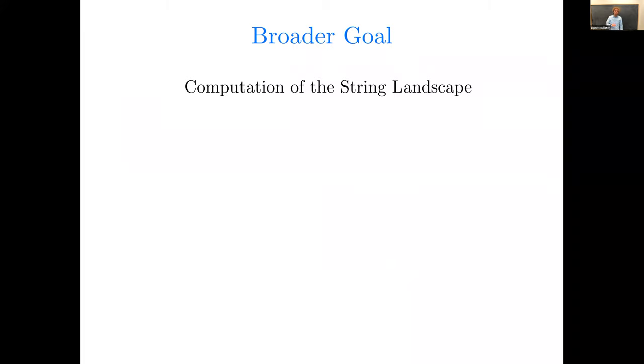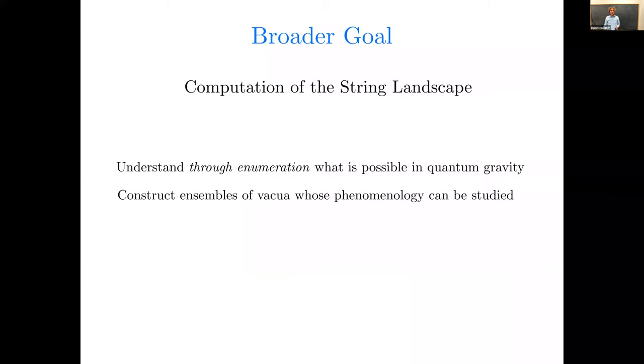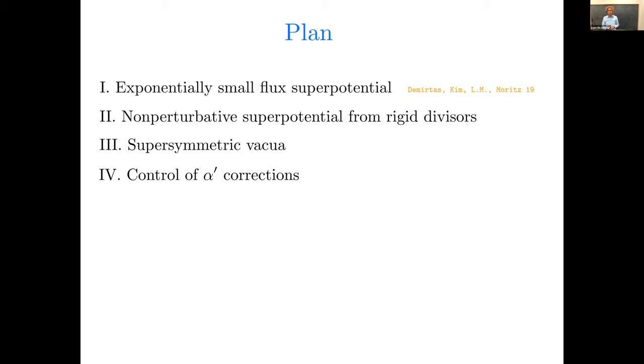Okay, and just to make sure the overall very big picture isn't lost, the broader goal is to try to compute parts of the string landscape, try to understand through enumeration what might be possible in quantum gravity, and try to make ensembles of vacua whose phenomenology can be studied. So in this particular work, we were constructing KKLT vacua, but the general approach is more wide than that.